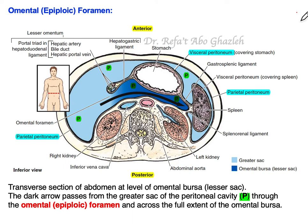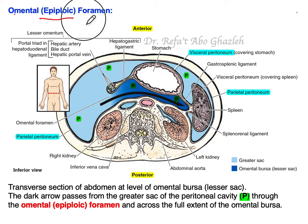Hi everyone. This video is one of a video series explaining the anatomy of the peritoneum. In this video, I'm going to talk to you about the omental foramen, also called the epiploic foramen or the foramen of the lesser sac.